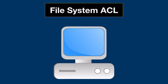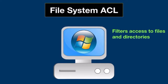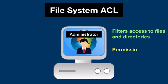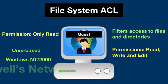Different ACLs have different working mechanisms based on what they do. File system ACL filters access to files and directories. It tells operating systems which users can access the system and what privileges the users are allowed. For example, a user logged in as a network administrator may have read, write, and edit permissions for a sensitive file. By contrast, a user logged in as a guest may only have read permissions. Some popular operating systems utilizing this mechanism include Unix-based systems, Windows NT and 2000, and Novell's network.